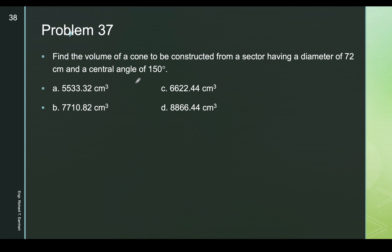Problem 37: find the volume of a cone to be constructed from a sector having a diameter of 72 centimeters and a central angle of 150 degrees. If we combine the two sides of the sector, it forms a right circular cone. The radius of the sector equals the slant height of the cone, and the central angle is 150 degrees.